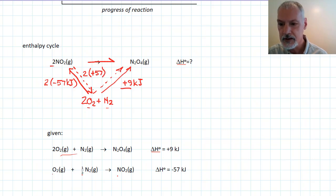And so going here and going here, I can then say, okay, the heat for my unknown reaction is exactly the same as going this alternative path. 2 times 57 plus the 9, and I arrive at the same answer, 123 kilojoules.